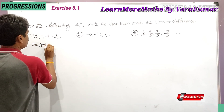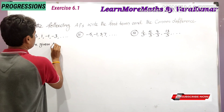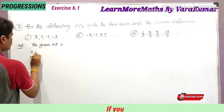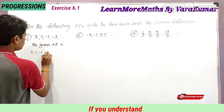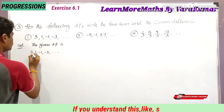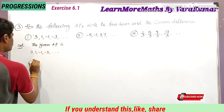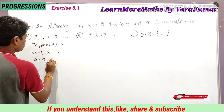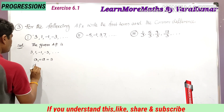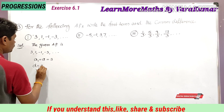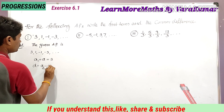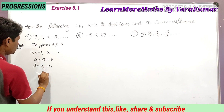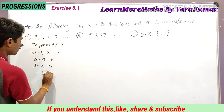The given AP is: 3, 1, -1, -3, and so on. He is asking to write the first term. The first term is a₁, which is a, that is 3. The common difference is denoted by d, that is a₂ minus a₁. So a₂ is 1 and a₁ is 3, so 1 minus 3.